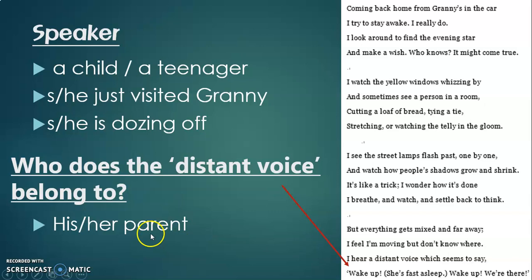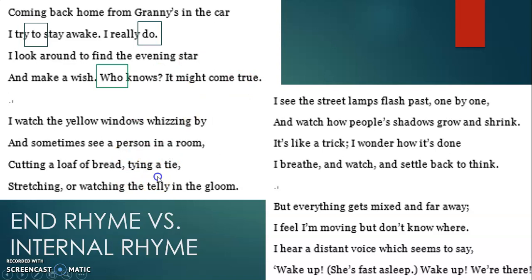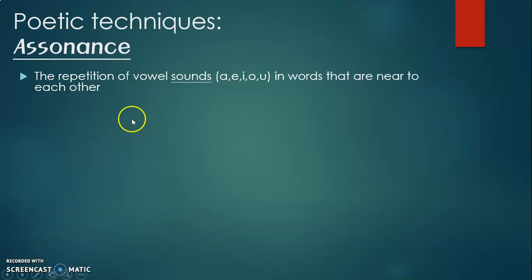We've talked about end rhymes — now what about internal rhymes? A reminder: an internal rhyme involves rhyming words that appear on the same line. Here we have three examples. First, 'do' and 'to': 'I try to stay awake, I really do' — the internal rhyme emphasizes the rhythm and gives the poem a better rhythmic flow. Second, 'who' and 'true'. Third, 'stretching' and 'watching'.